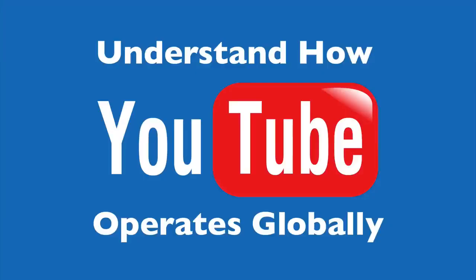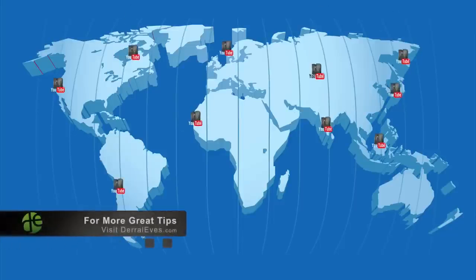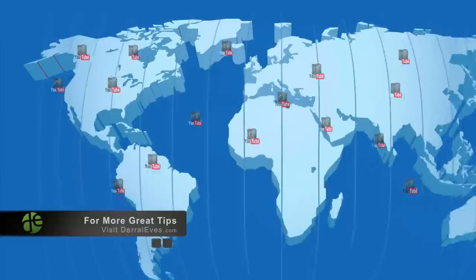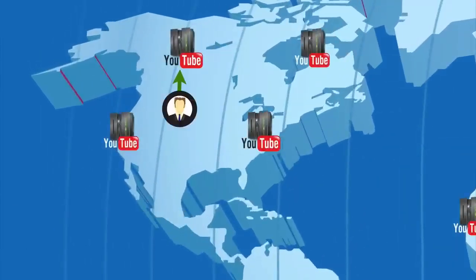Before I can explain to you why the video freezes at 301, we need to understand YouTube and how it operates globally. YouTube actually has a facility that stores your videos, and they're all over the world. For example, if I'm ready to upload a video and I'm in the United States, it's going to find a data center closest to me. That data facility will actually house that video.